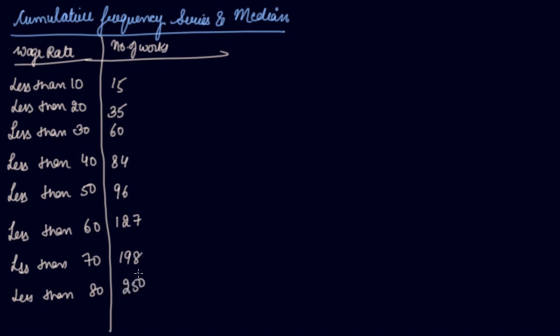So whenever less than or more than series are given, that is open-ended series are given, in that case your number of workers will always be a cumulative frequency. Which means less than 10 includes 0 to 10, that is 15. Less than 20 includes 0 to 10 and 10 to 20. Less than 30 includes 0 to 10, 10 to 20, 20 to 30. So these are your cumulative frequency.